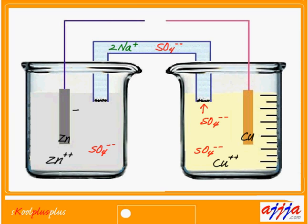As soon as one zinc atom becomes zinc positive (oxidation), two electrons are produced. This side needs something negative — but there's no circuit. So I'm going to put one light bulb there. Now we have a circuit, and electrons can flow through it. Through the bridge, the anions — SO₄ — can go through.